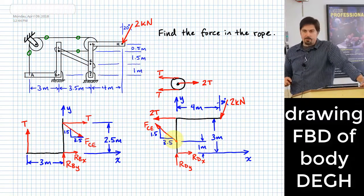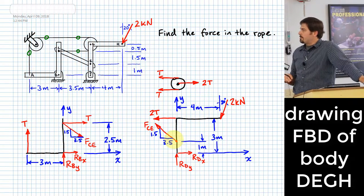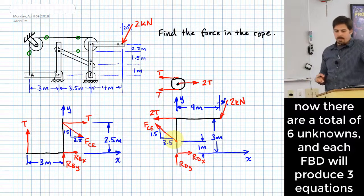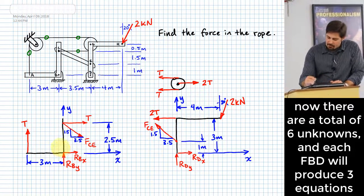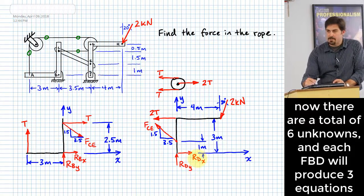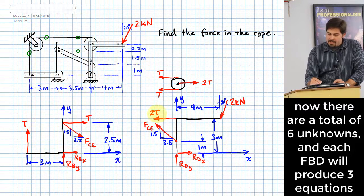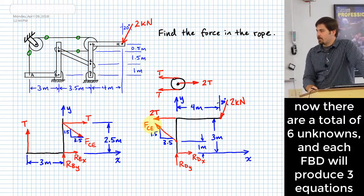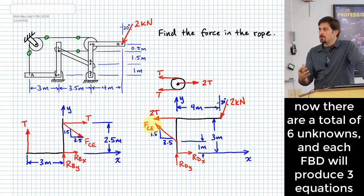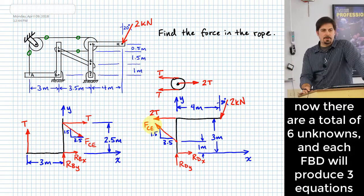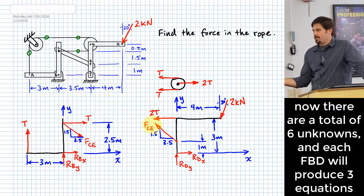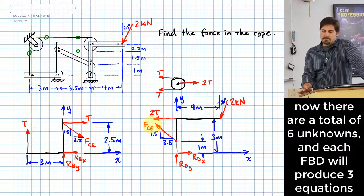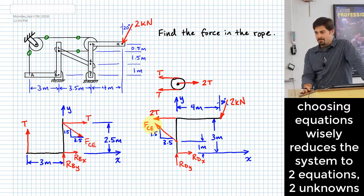Now I have two free body diagrams. How many unknowns total? The left FBD has four; the right one adds two more unique ones, RDX and RDY, but T and FCE I already had. That brings me to a grand total of six unknowns. I can write six equations because I have two non-concurrent force systems — each can provide up to three equations, so at worst it's a six-by-six system.